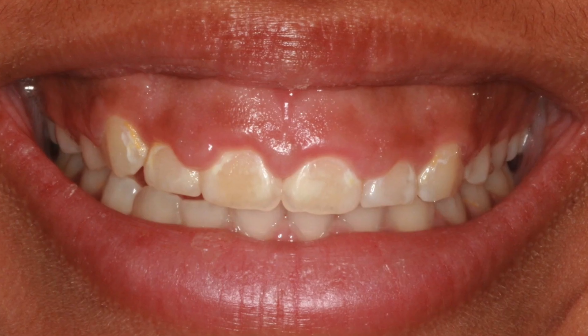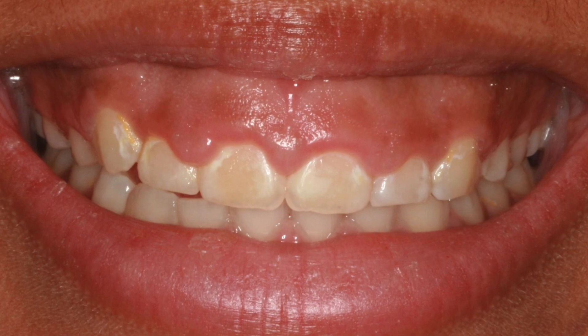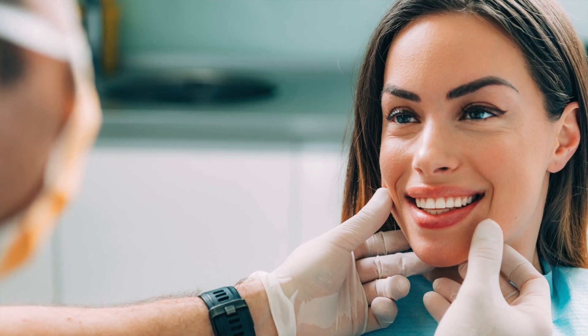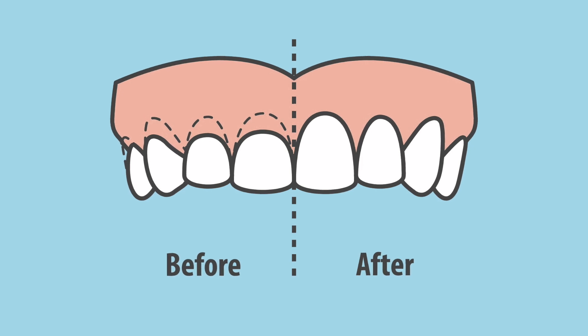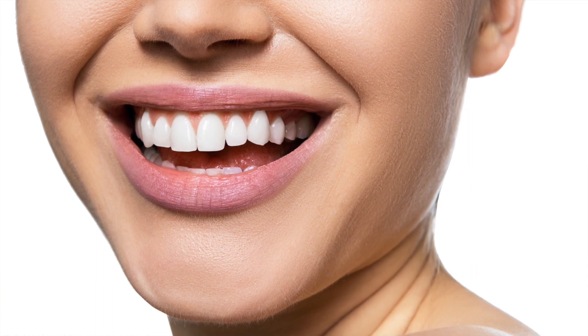Another procedure that periodontists commonly perform is aesthetic crown lengthening. Some patients show a lot of gum tissue when they smile — there are many reasons why a patient may have a gummy smile. The periodontist is trained to diagnose and treat the gummy smile. Keep in mind that treatment of a gummy smile is an elective procedure, meaning it is entirely optional. Some gummy smiles are treated with aesthetic crown lengthening procedures that make short teeth appear longer, which can really change the appearance of a smile and make it much more full and pleasing to look at.